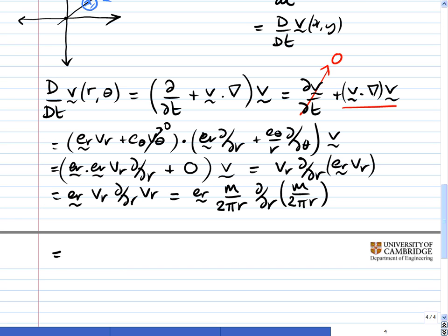And scrolling down, that's equal to e_r m over 2πr times minus m over 2πr squared, which is all going to work out as e_r m squared over 4π squared r cubed, with a minus sign at the front.